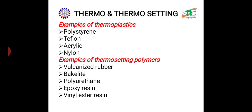Thermoplastics can be recycled — examples include nylon, polystyrene, and acrylic compounds. Examples of thermosetting plastics include Bakelite, used in switch boxes, cooker handles, and cooking utensil handles.